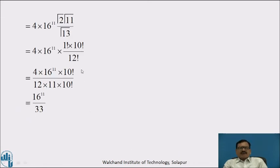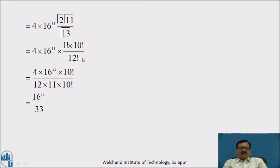Using the relation between BETA and GAMMA Function, we get 4 into 16 raised to 11 into GAMMA of 2 into GAMMA of 11 divided by GAMMA of 13. By using properties of GAMMA Function: GAMMA of 2 is 1 factorial, GAMMA of 11 is 10 factorial, GAMMA of 13 is 12 factorial. Writing 12 factorial as 12 into 11 into 10 factorial, the 10 factorial cancels, giving 16 raised to 11 by 33, which is the value of the given definite integral.